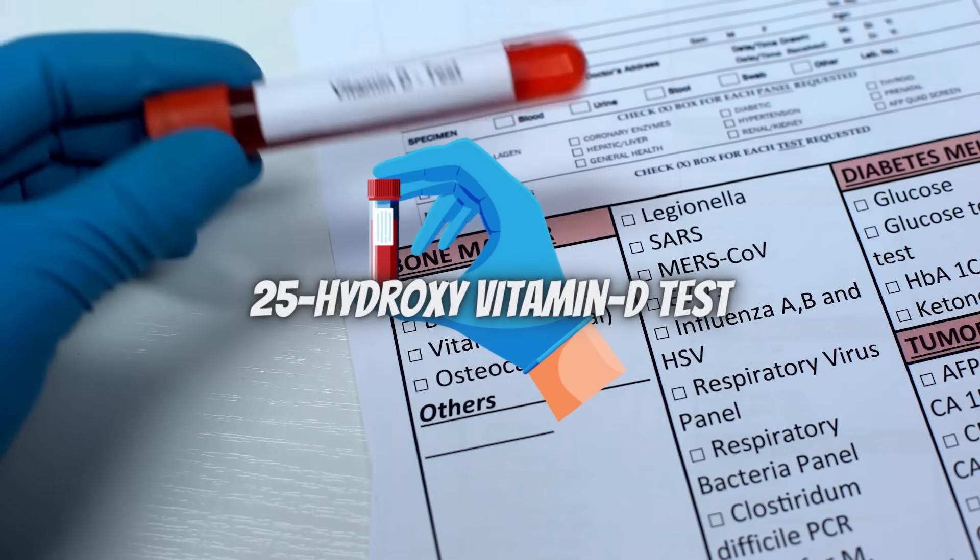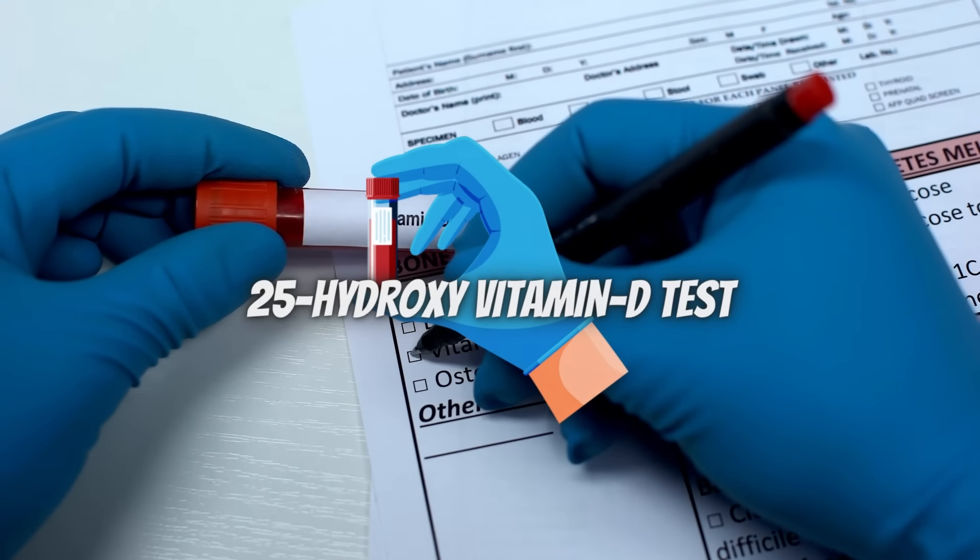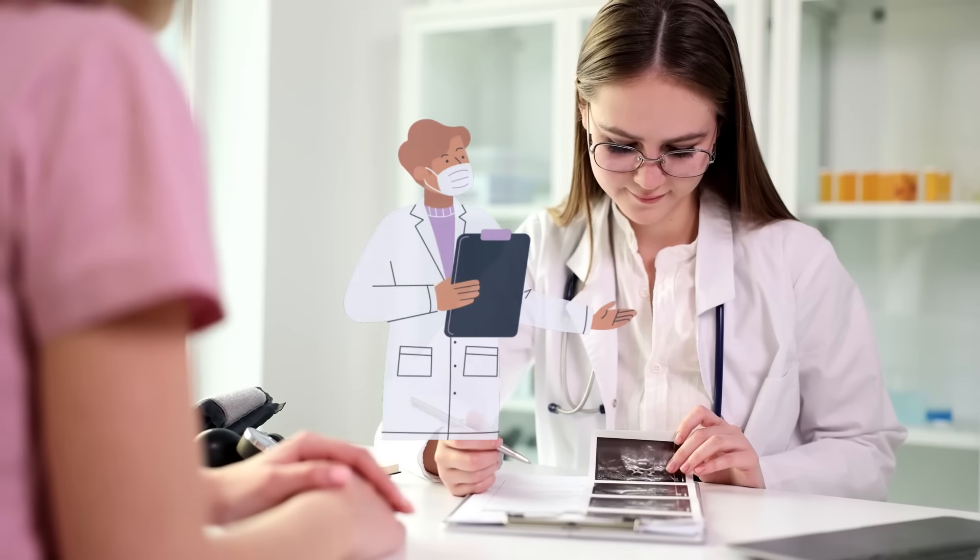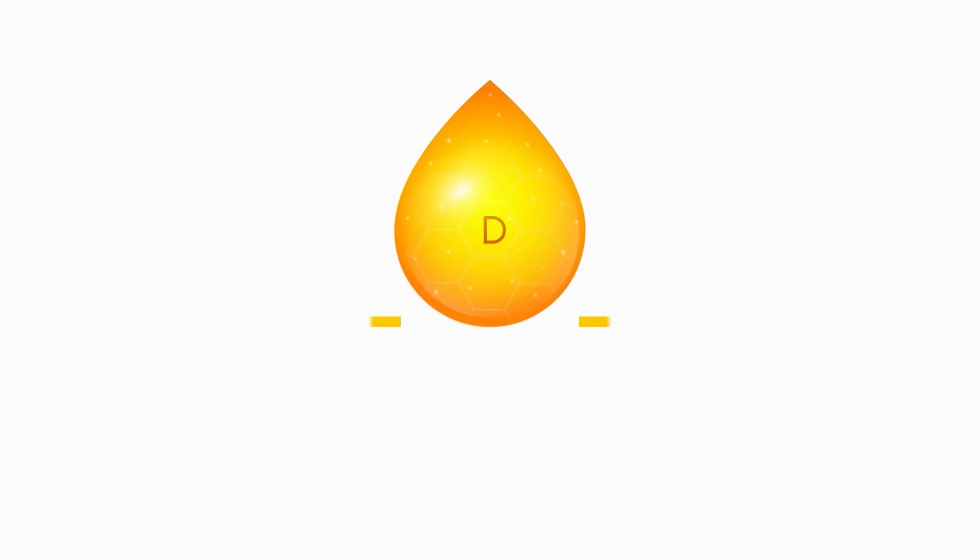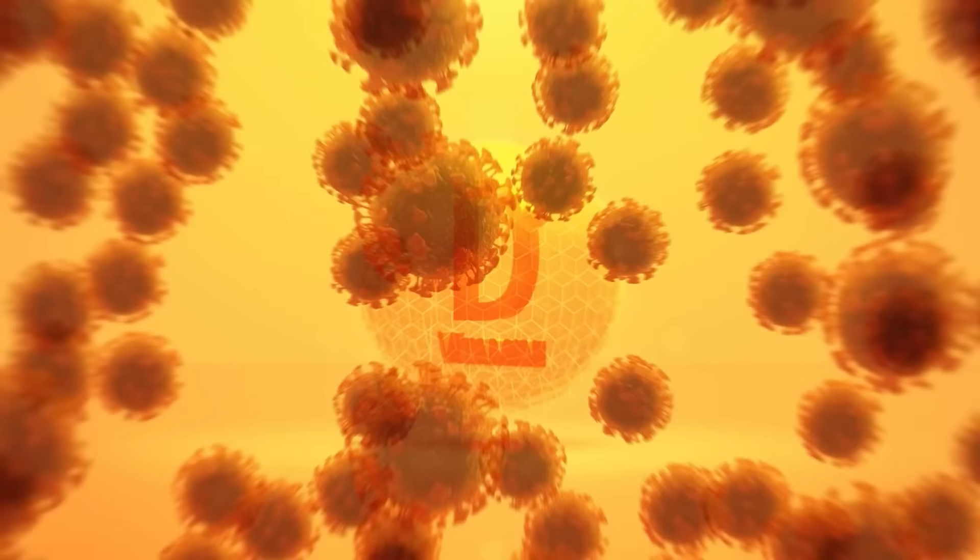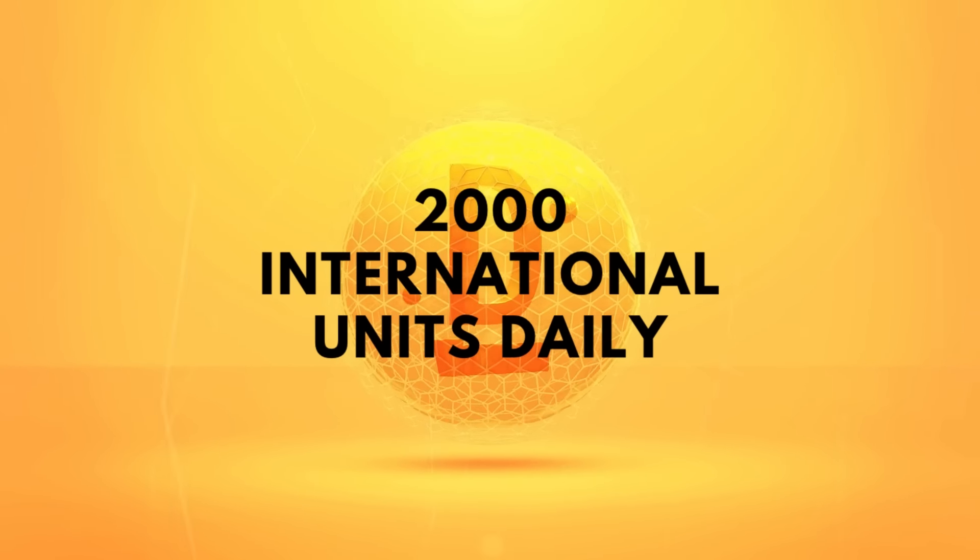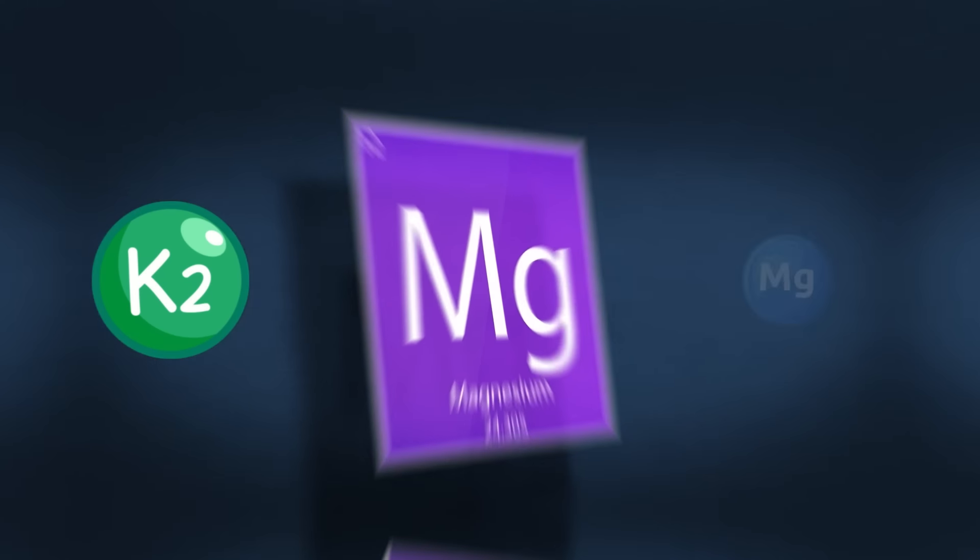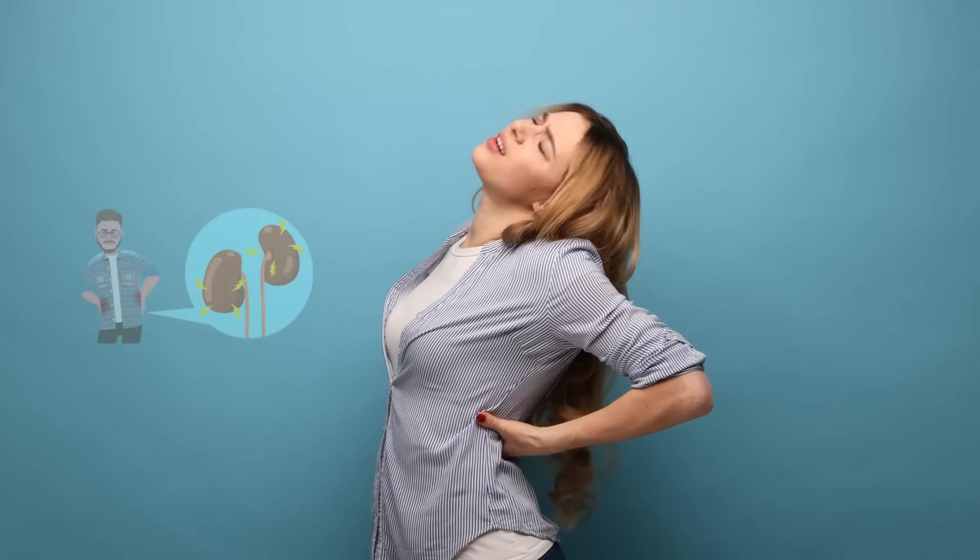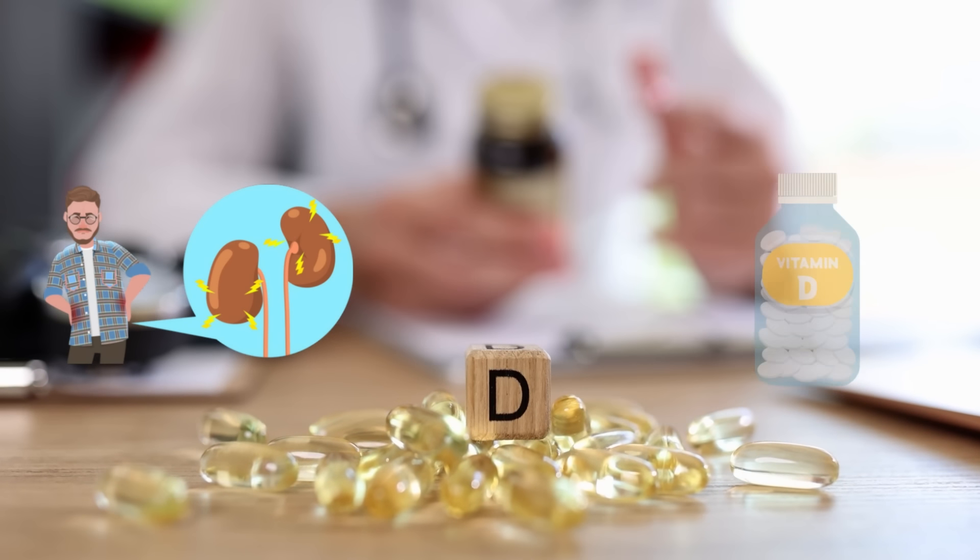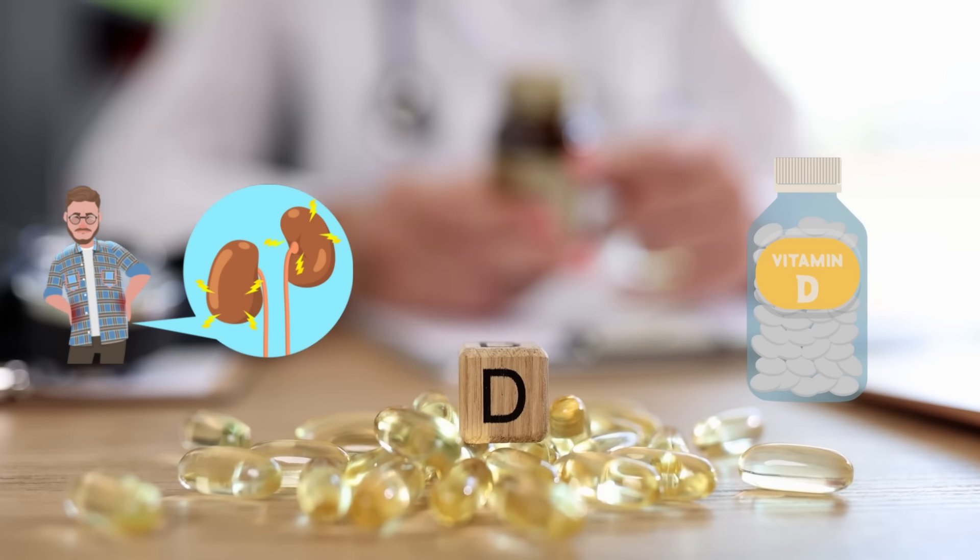There's a test called the 25-hydroxy vitamin D test. If its reading is below 30 nanograms per milliliter, experts say it's not so great. Taking vitamin D is simple. Just take around 2,000 international units of vitamin D daily, with a bit of vitamin K2 and magnesium. And if your kidney issues are more serious, there are other special kinds of vitamin D supplements that your doctor can prescribe you.